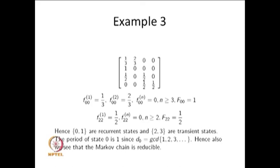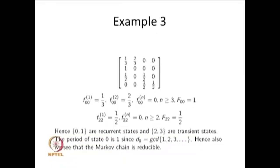Since states 0 and 1 are positive recurrent and aperiodic, they are also ergodic states. Whenever a Markov chain has states that are positive recurrent and aperiodic, those states are called ergodic states. Later, I am going to give the definition of ergodicity and explain that property.